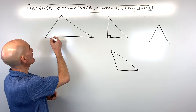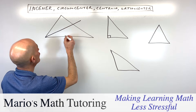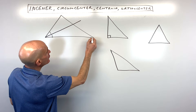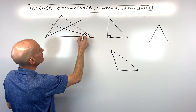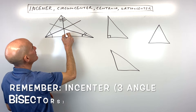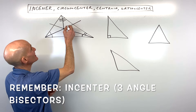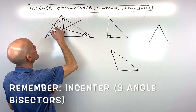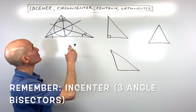Let's start with the incenter. When we're talking about the incenter, what we're looking at are the three angle bisectors. This ray here is cutting this angle in half. We draw another angle bisector from this vertex, cutting this angle in half. And if we draw one more from the third vertex, cutting that angle in half, what we have is this point right here, which is called the incenter. The reason they call it the incenter is because you can inscribe a circle inside the triangle such that the sides of the triangle are tangent to the circle.